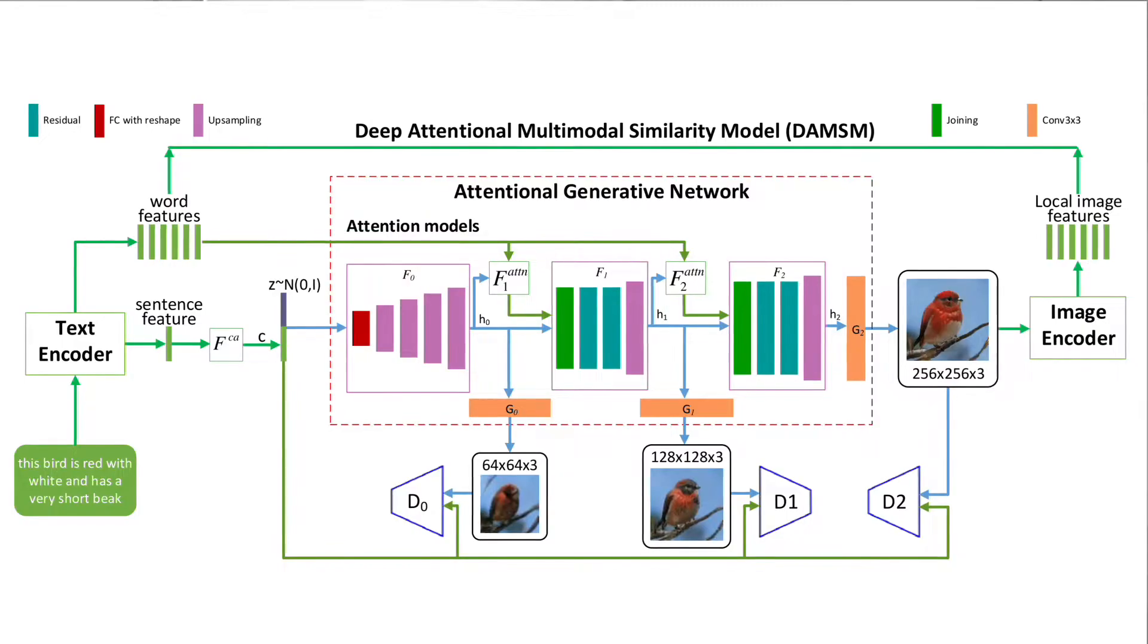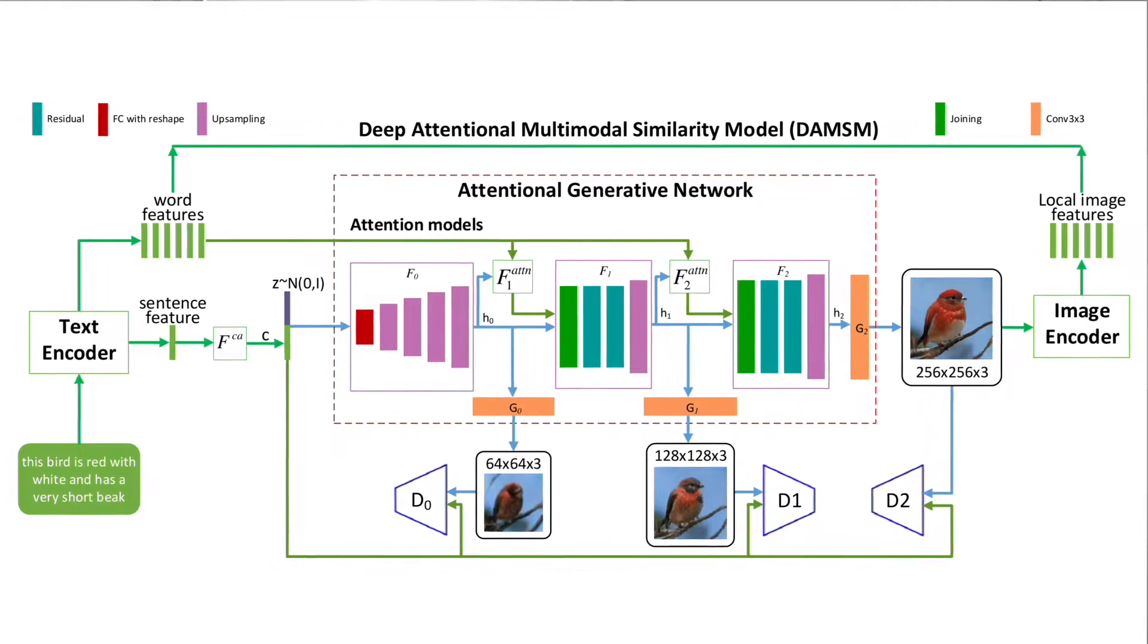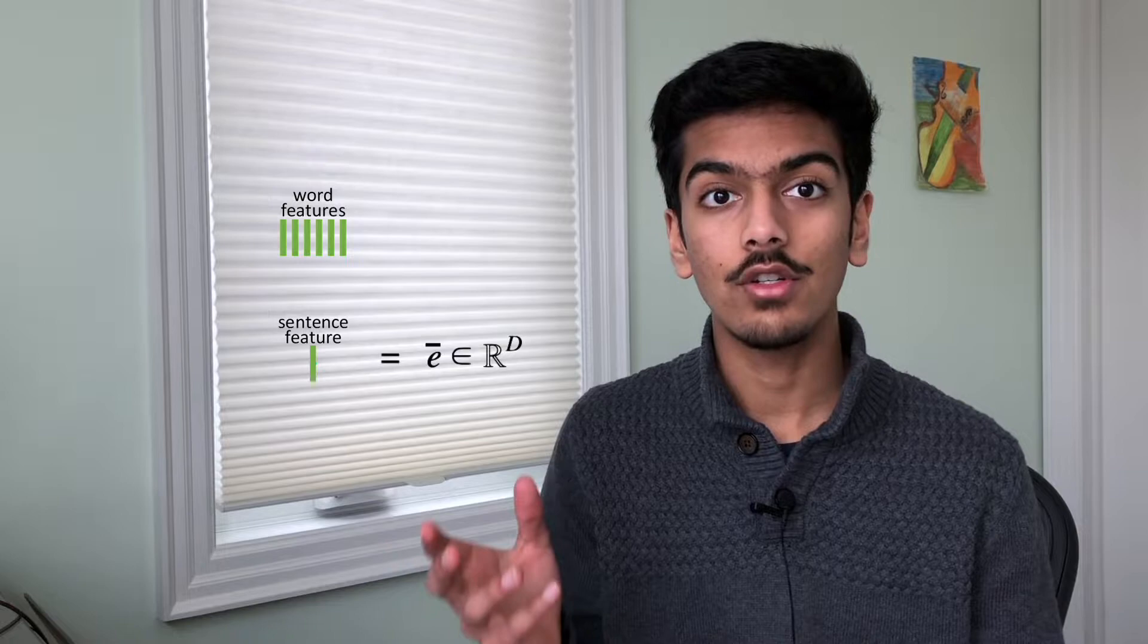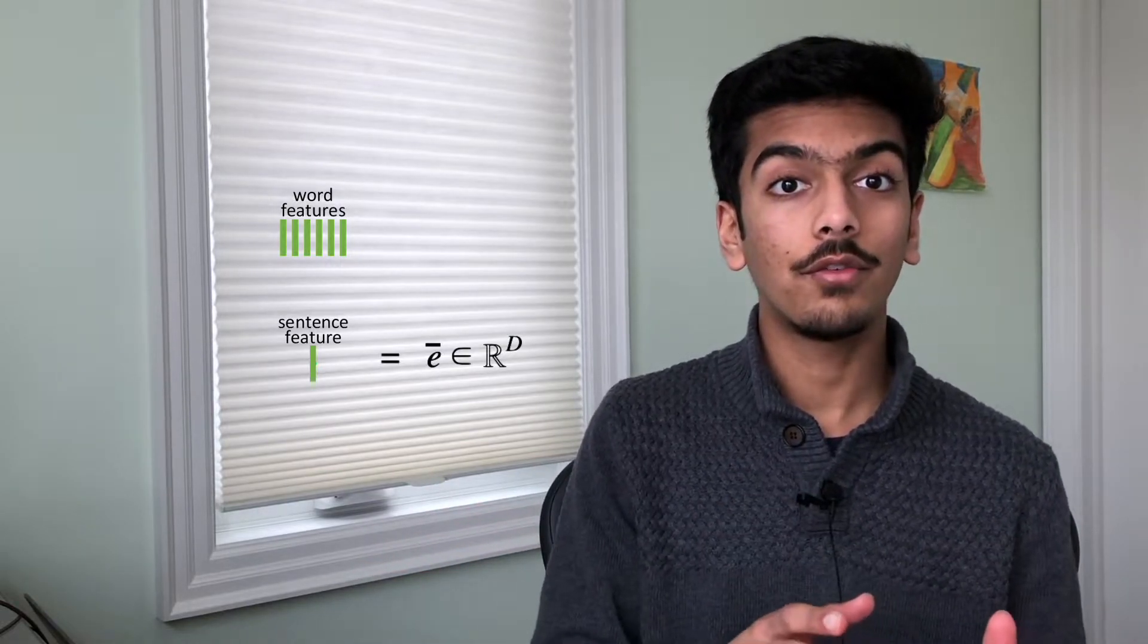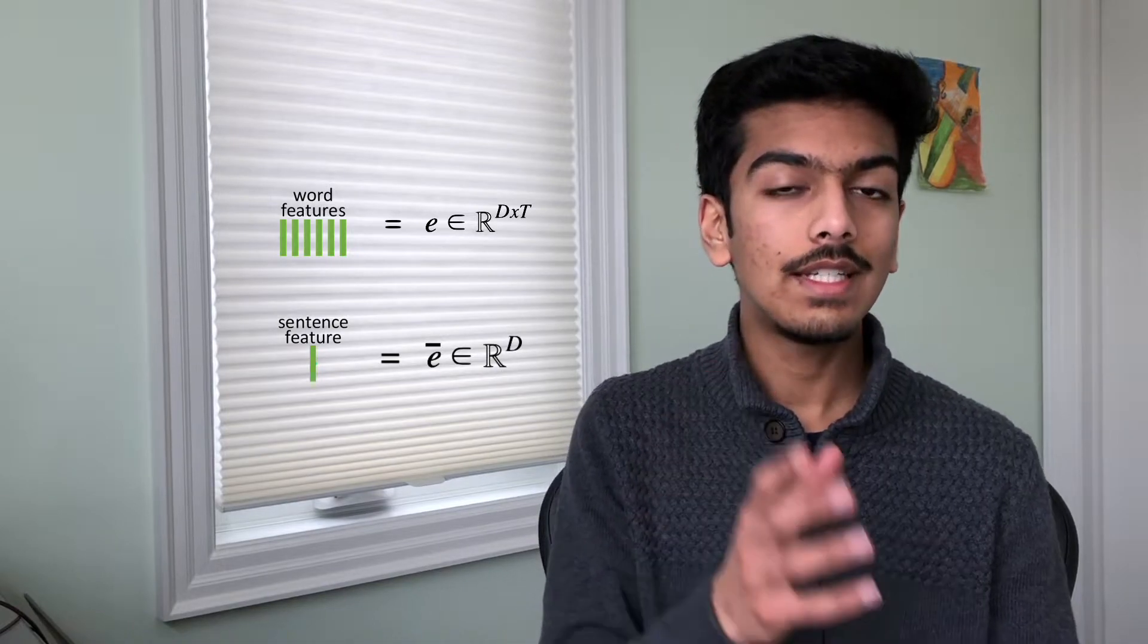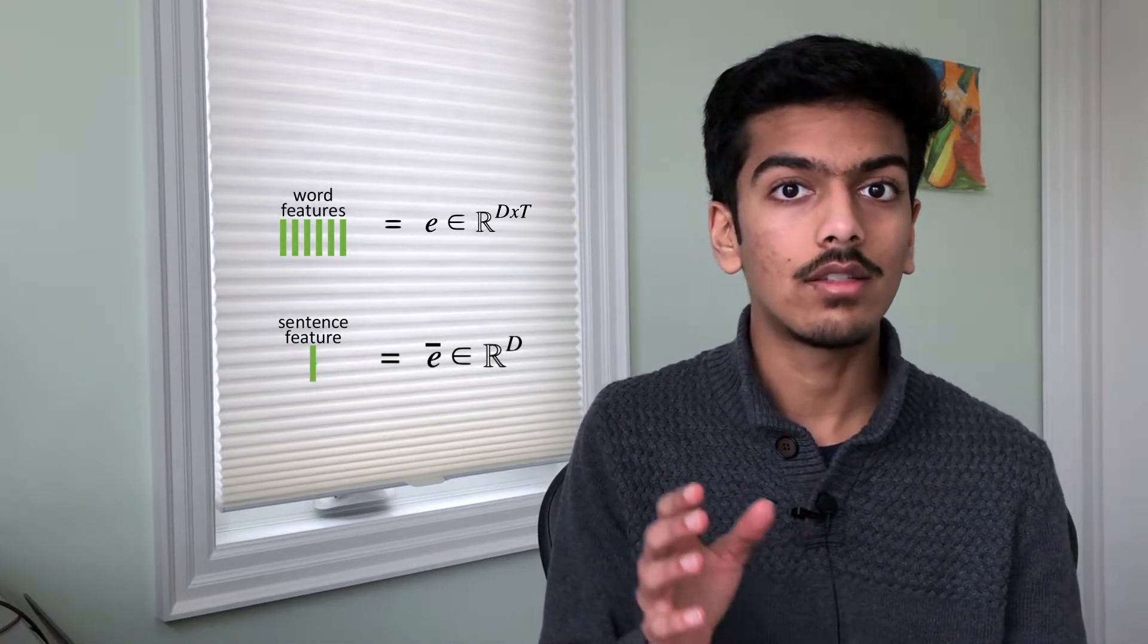So this is what the architecture for AttentionGAN looks like. We start off by taking the text description and passing it through a bidirectional LSTM. This outputs sentence level and word level features. So the sentence level features are a d-dimensional vector and the word level features are a d by t-dimensional matrix, where t is the number of words in the text description.